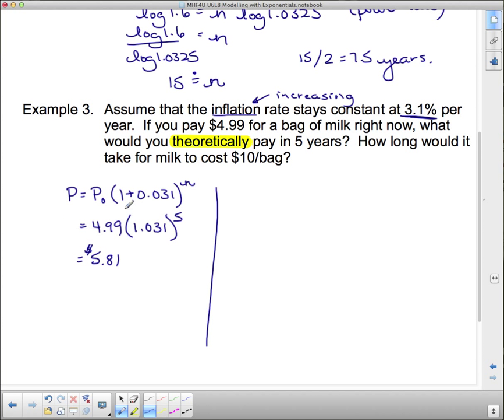And now what we want to do is take this equation. Price equals $4.99, because that's how much it costs us now, times 1.031, but we don't know how long. It says how long, so since we don't know how long we're going to leave that as an n and that's what we're going to find out. Because we know the price that we're aiming for - we're aiming for 10 bucks, so I'm going to put 10 in there.